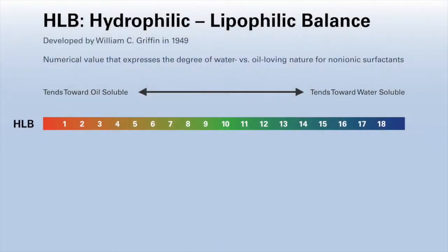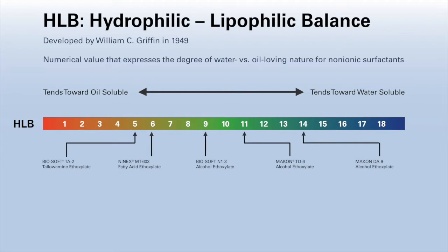To aid surfactant selection, hydrophilic-lipophilic balance, or HLB, is a simple descriptor of a surfactant's relative hydrophobicity, and is one way to classify emulsifiers and solubilizers.